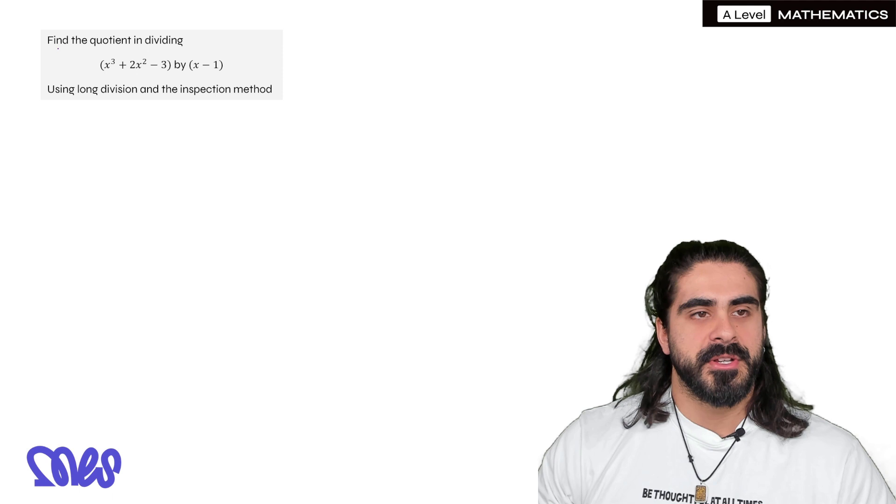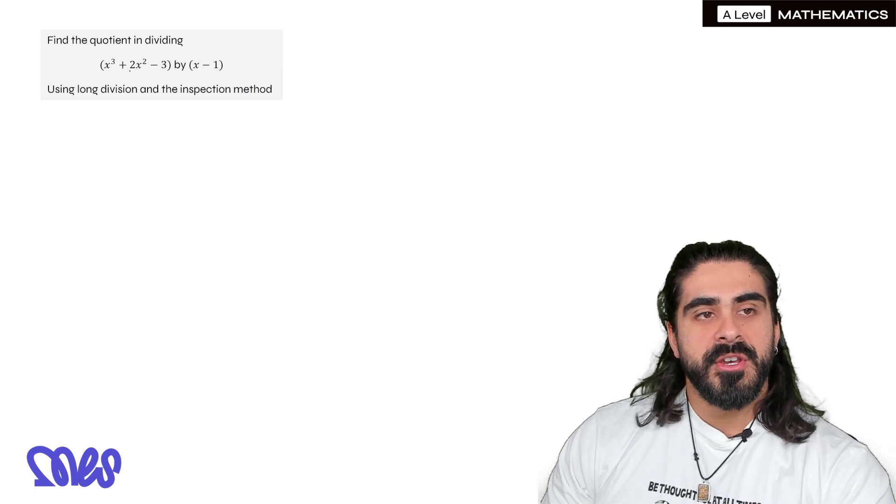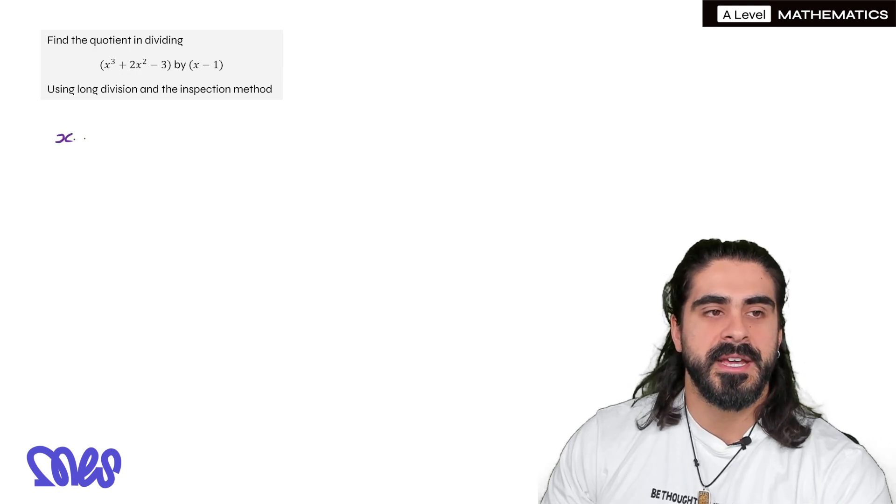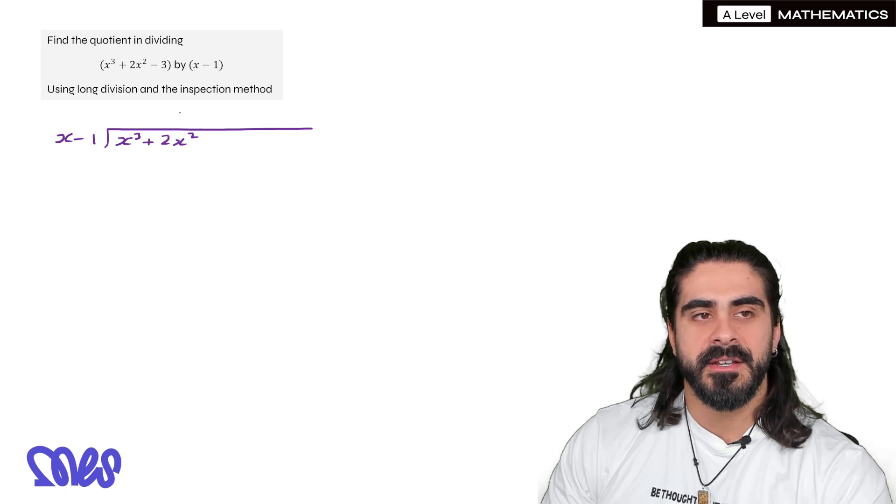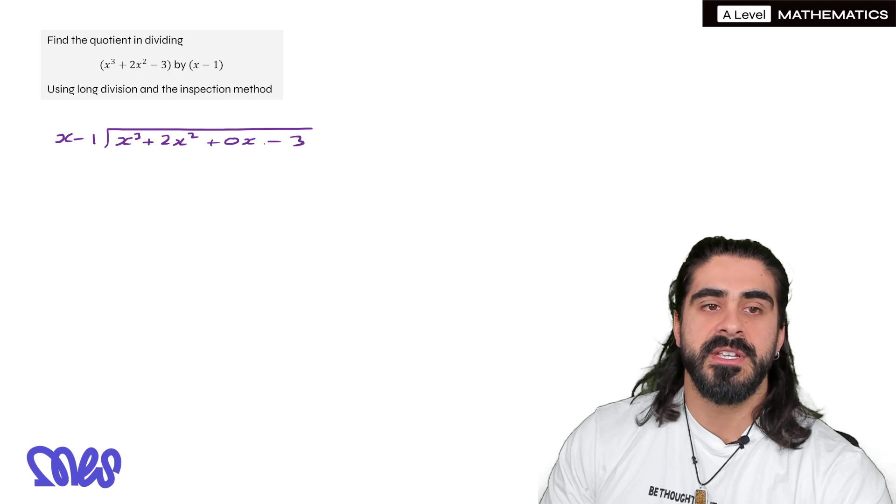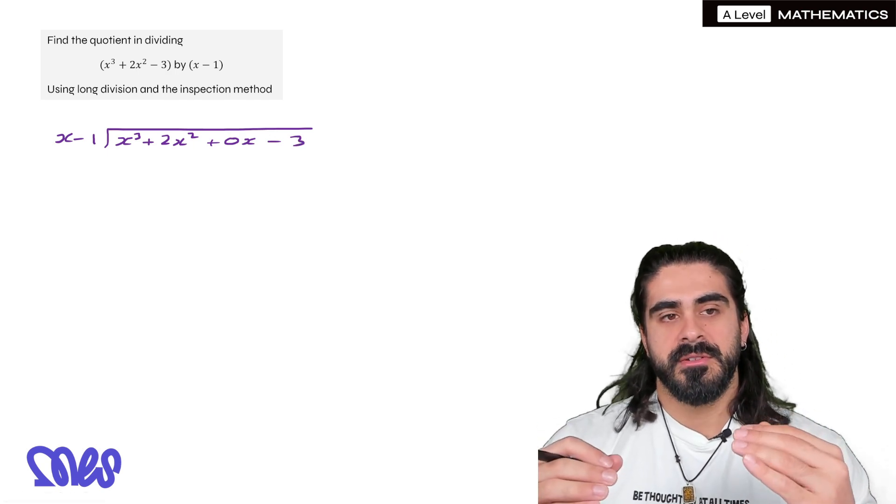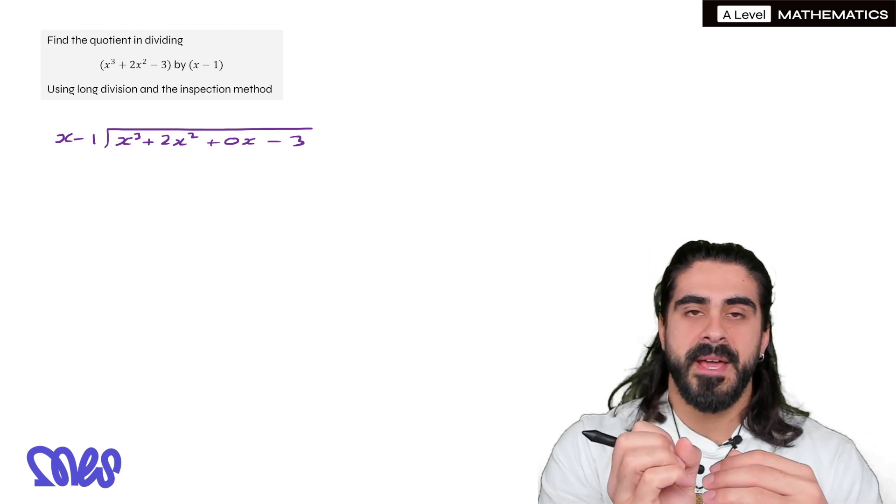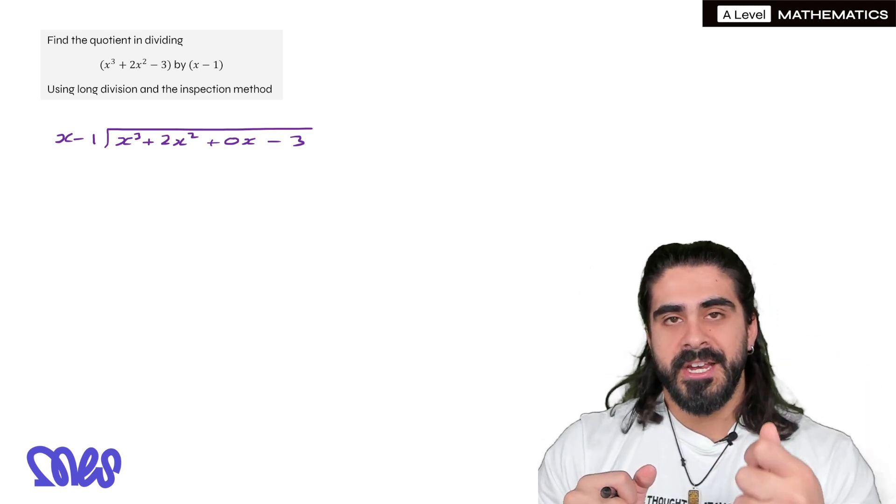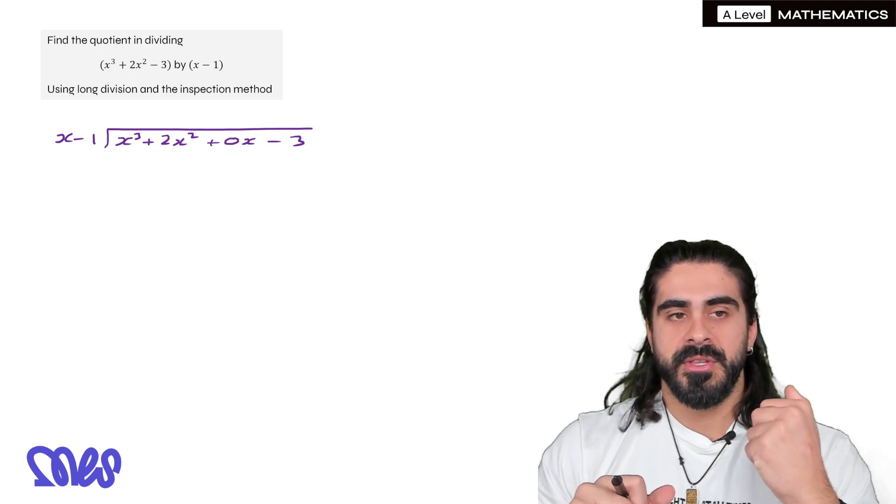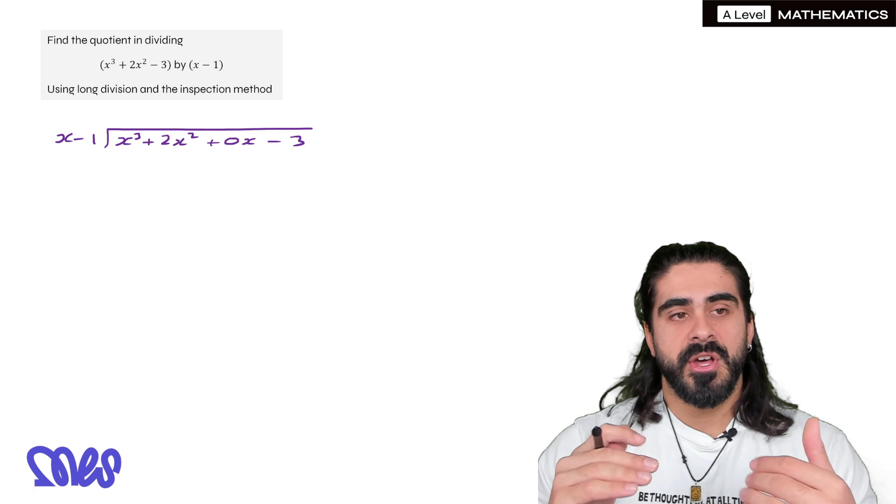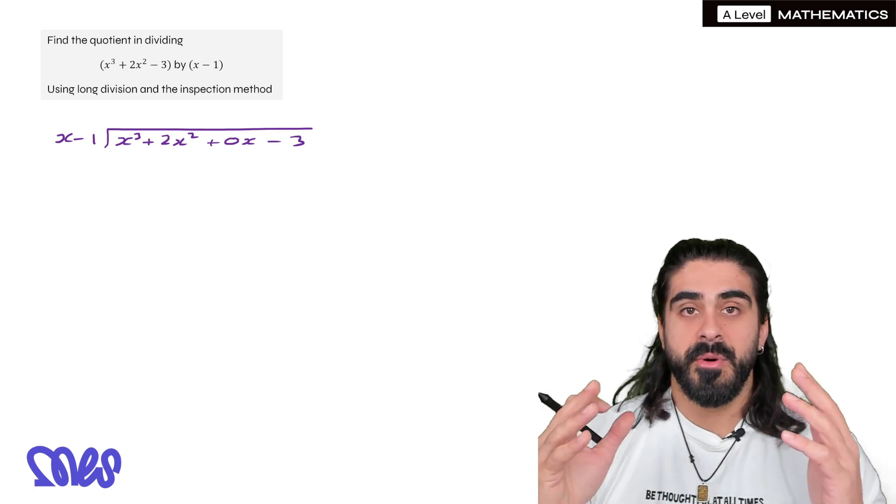Okay next question. Find the quotient in dividing x³ + 2x² - 3 by x - 1 using long division and the inspection method. Now what you might notice is that there is a term missing and very regularly they do questions where there is a term missing. It's very simple we do the same thing. So x - 1 into x². Now when there is a term missing just put 0x - 3. And the reason you want to do that is that if you don't put it there what students do is when we take away the terms in our division if you don't write the 0x what they do is they just copy and paste the term down. But the double negative changes the sign on whatever you're bringing down. So please put the 0 whenever there is a term missing. If there was no x² term you would say 0x². If there was no x² or x term you'd put 0 on both of them.